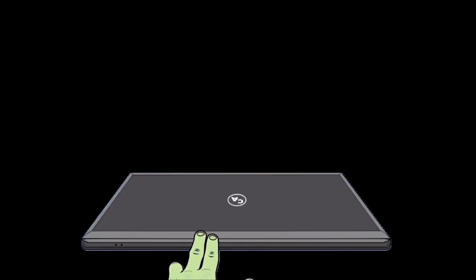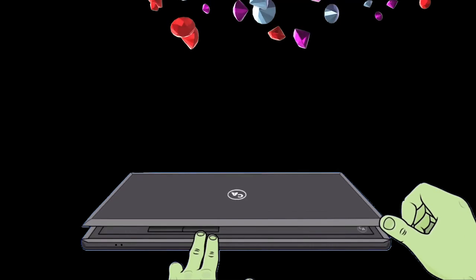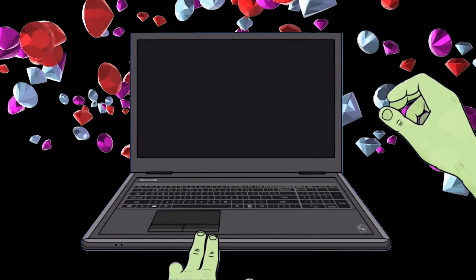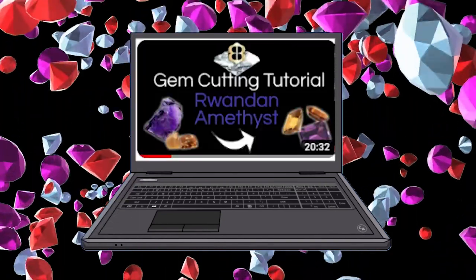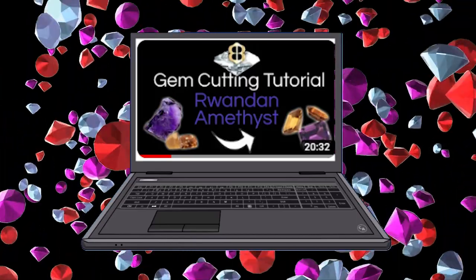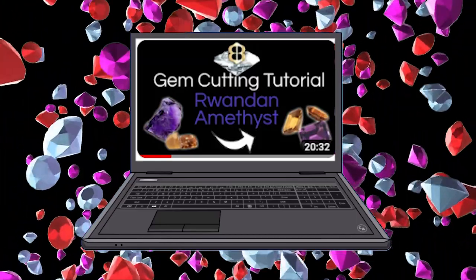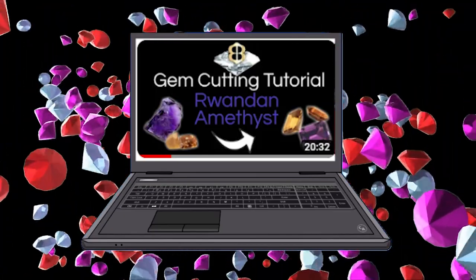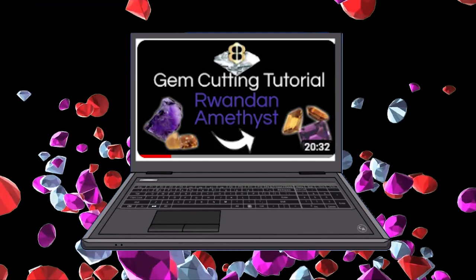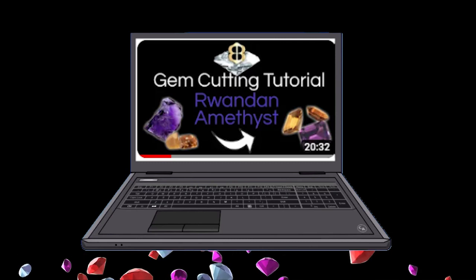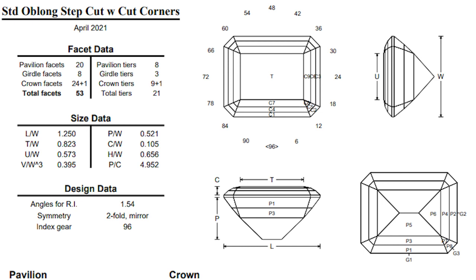Because this piece of rough is shaped like a rectangle, I'm going to use a design which I've cut before using a piece of Rwanda amethyst. Rwanda amethyst is arguably the finest color of amethyst found to date. Although most in the gem trade agree that Rwandan amethyst is the top color of amethyst, it's not universally agreed. Here's a link to that video where I cut Rwandan amethyst using this design.